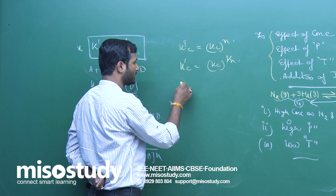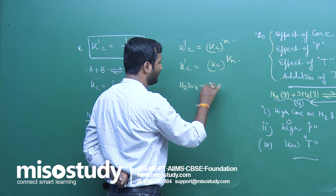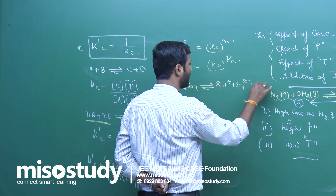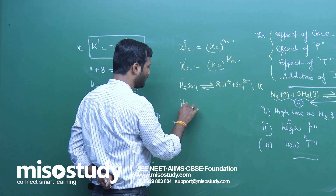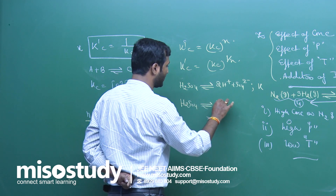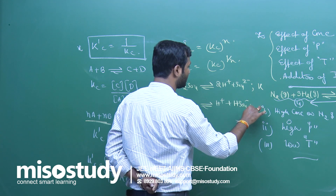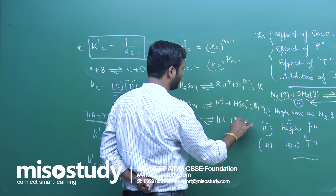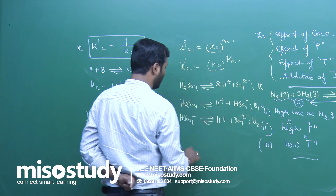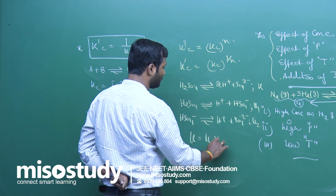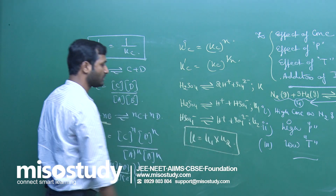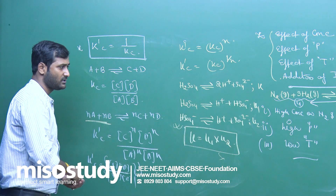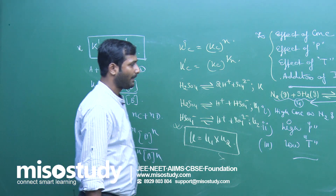Suppose a reaction proceeds in steps: H2SO4 gives 2H⁺ plus SO4²⁻ with overall equilibrium constant K. In step one, H2SO4 gives H⁺ and HSO4⁻ with constant K1. In step two, HSO4⁻ gives H⁺ and SO4²⁻ with constant K2. The relation is K equals K1 times K2.